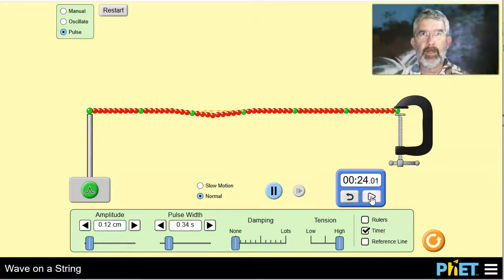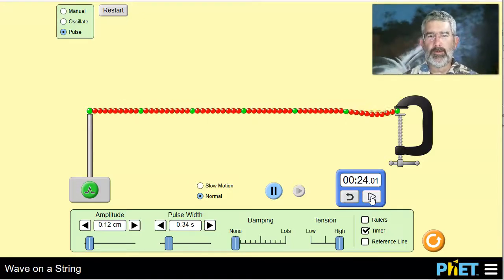That means the frequency is 1 divided by 2.4 cycles per second, which is about 0.42.